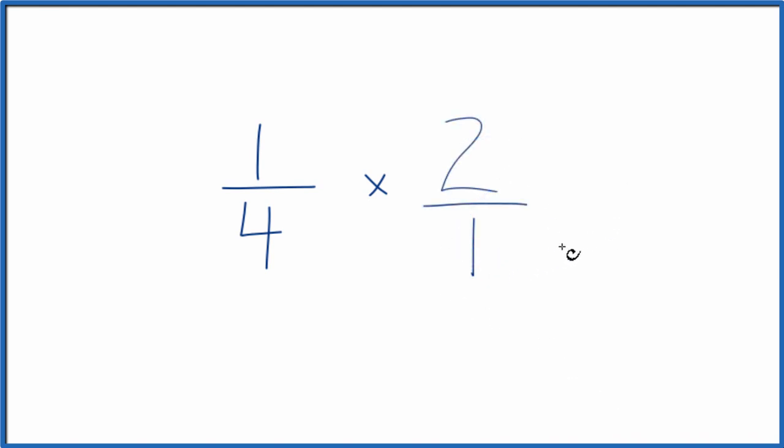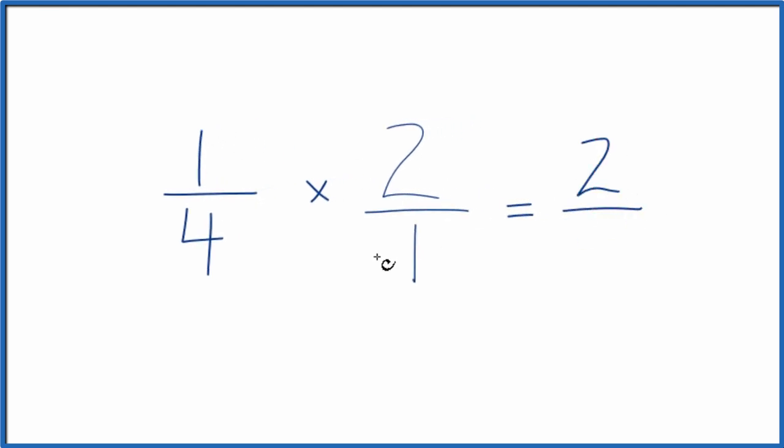That's because when we multiply, we multiply the numerators—1 times 2 is 2—and then multiply the denominators. 4 times 1 is 4, so 1/4 times 2 gives us 2/4.